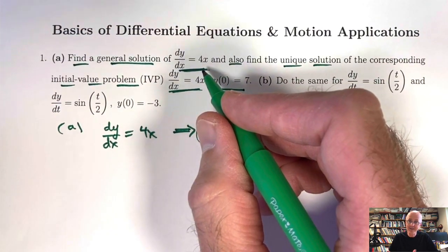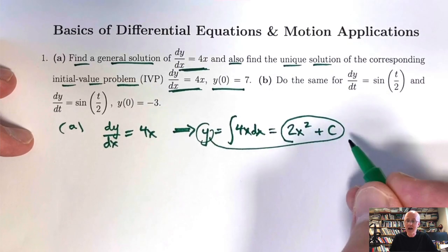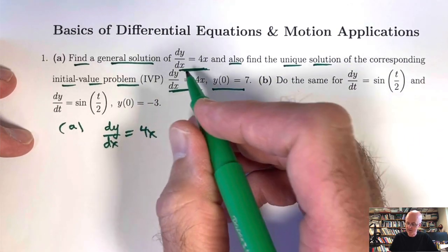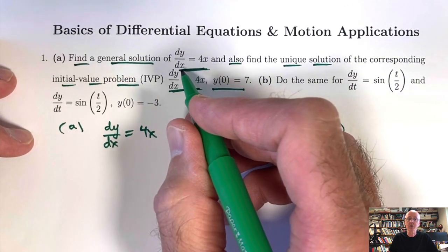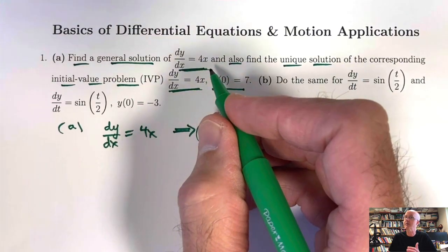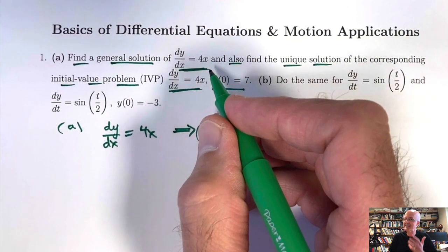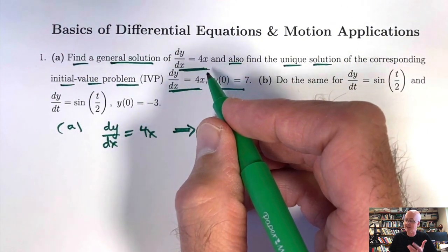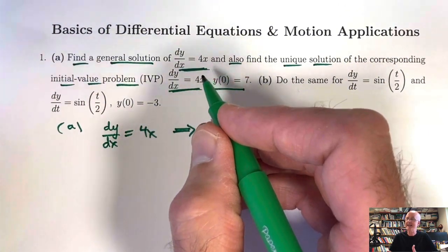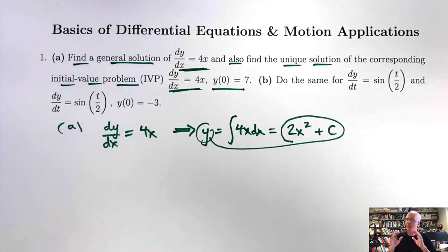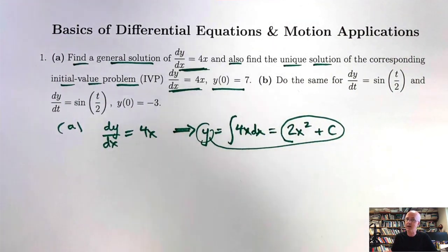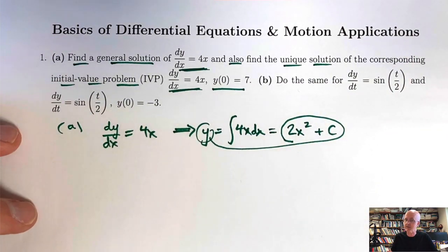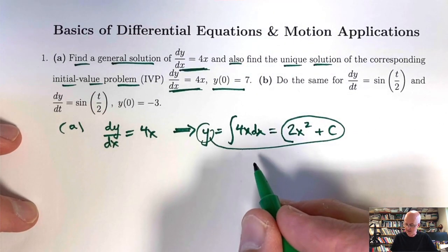If the right-hand side had been 4y instead, this would not work, because then you would be after a function whose derivative dy/dx is always 4 times the function itself. I'll give you a hint that that's an exponential function, but that's not one of our topics for this particular video.